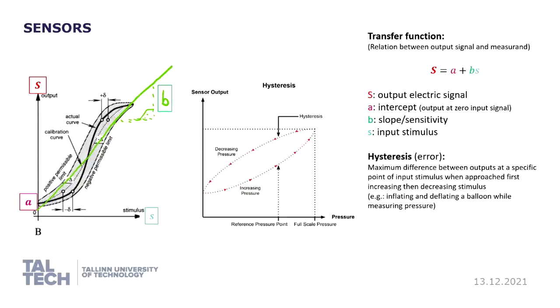And what we look at here is the transfer function. So here's a stimulus-output curve, stimulus being the input and output being the electrical signal. This is the response curve with slope b, which also translates to sensitivity, and the intercept of this linear curve is the output at zero signal.